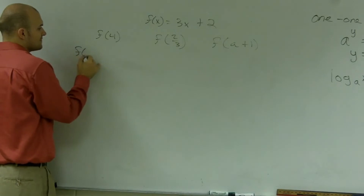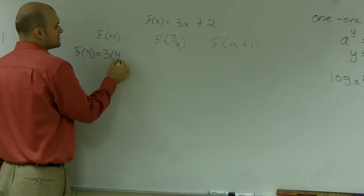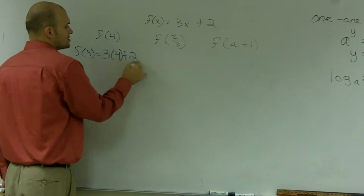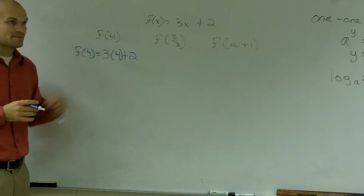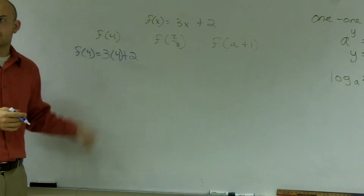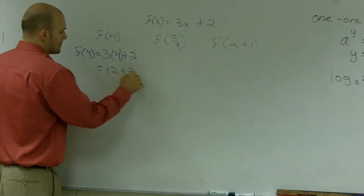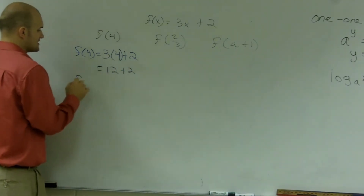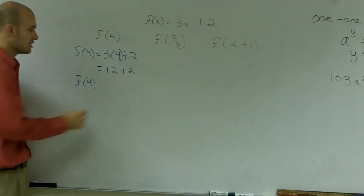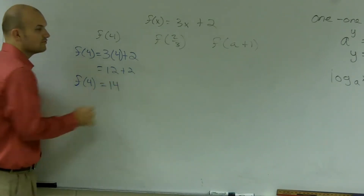So I'll say f of 4 equals 3 times 4 plus 2. Well, 3 times 4 is 12, and 12 plus 2 is 14. So I say the value of my function at 4 is equal to 14.